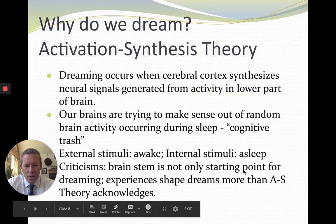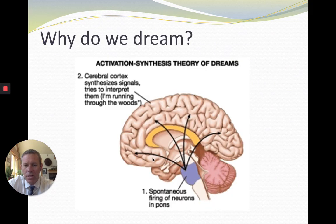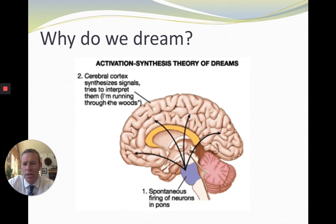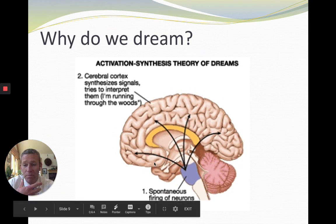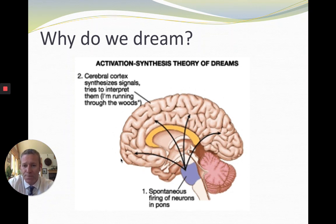One criticism here is that the brainstem is not the only starting point for dreaming — experiences shape dreams more than the activation synthesis theory accounts for. The spontaneous firing of neurons happens in the brainstem, and those firings go out into the rest of the brain, which then tries to synthesize and interpret those signals — hence the term. It deals less with visual input and stimulus, except that if you watch someone sleep, their eyes are still darting around — they're still seeing things even with their eyes closed. Their brain is still processing sounds, not from voices in the environment, but because the brain itself is creating those experiences. It's kind of crazy stuff.